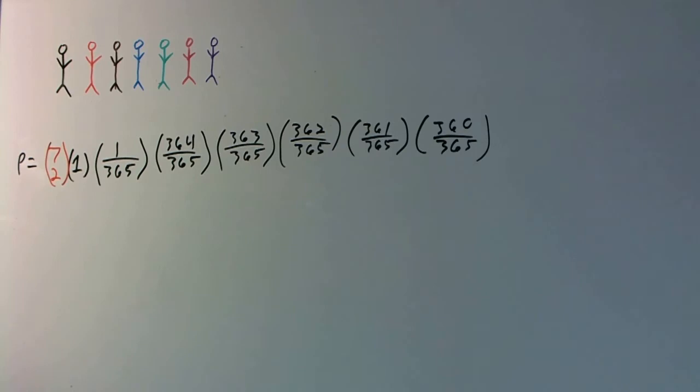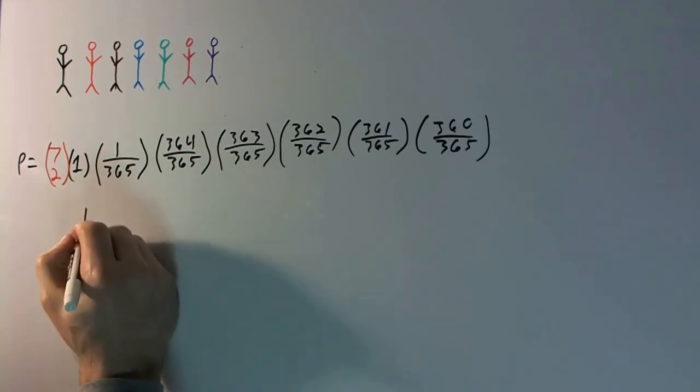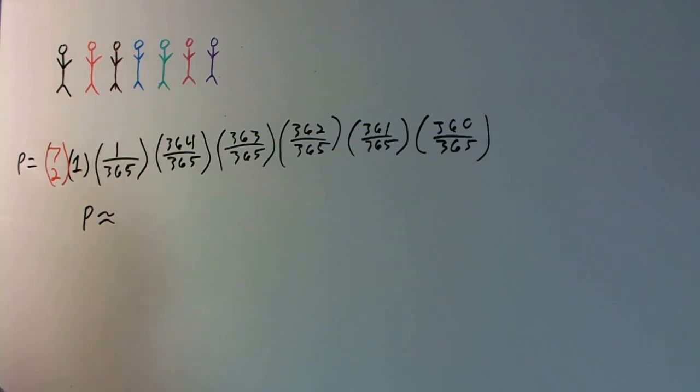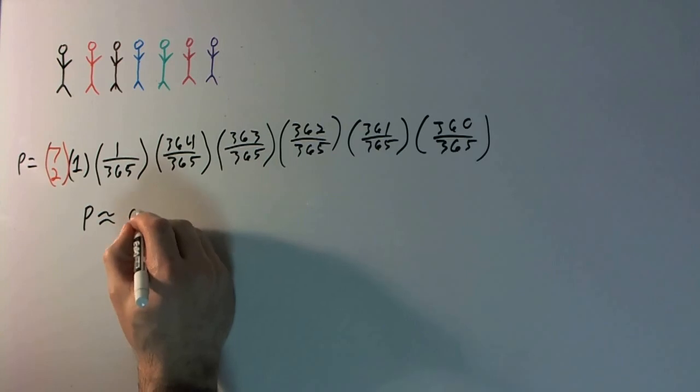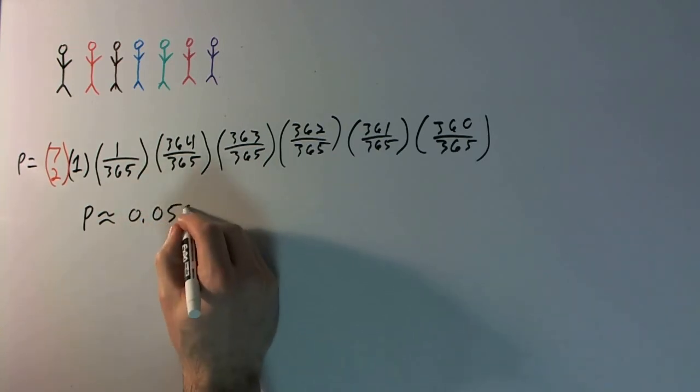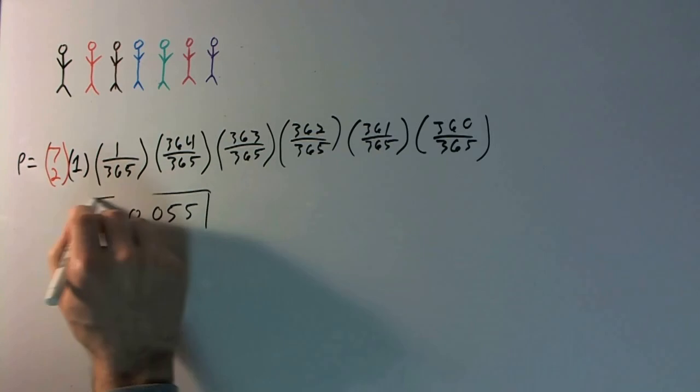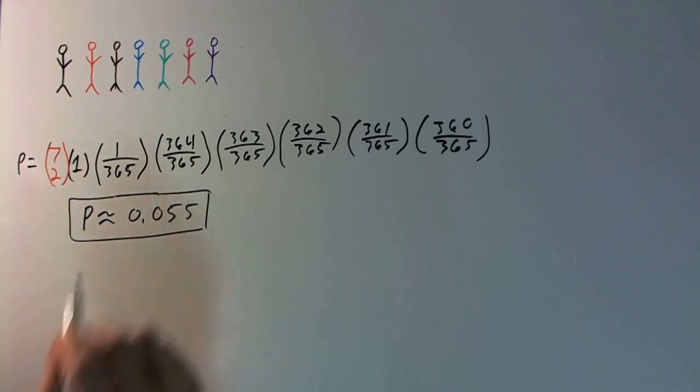So, if you do the math and you crunch the numbers here, you find that the probability that this happens is going to be something like, probability is going to be, again, I don't have a calculator handy, so forgive me, but if you do the math, it should come out to something like 0.055 or something like that, right? So, figure 5%.